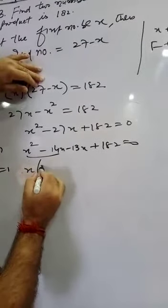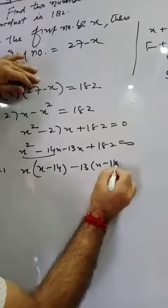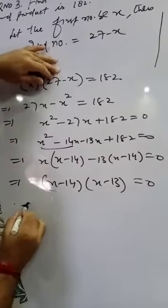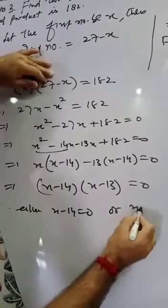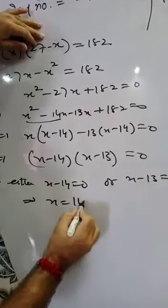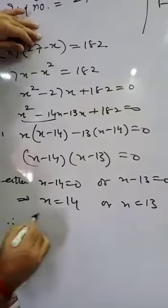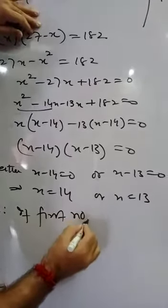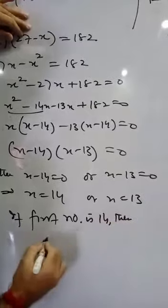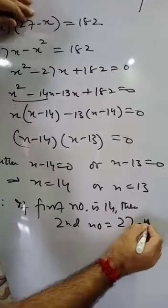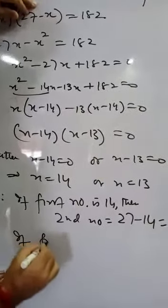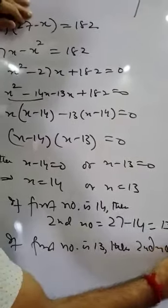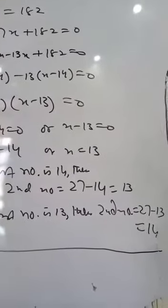Now grouping: take x common to get (x minus 14), giving (x minus 14)(x minus 13) equals 0. This gives either x minus 14 equals 0 or x minus 13 equals 0, so x equals 14 or x equals 13. Therefore, the two numbers are: if first number is 14, second number is 27 minus 14 equals 13; or if first number is 13, second number is 27 minus 13 equals 14. This is the solution to question number 3.